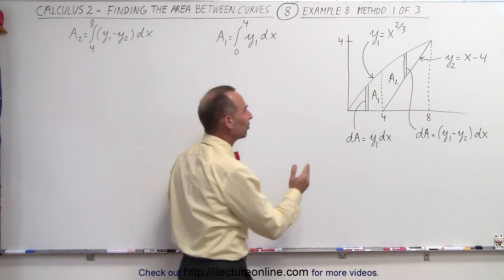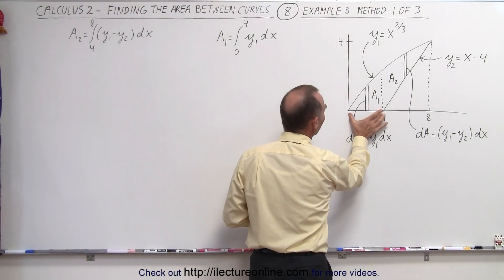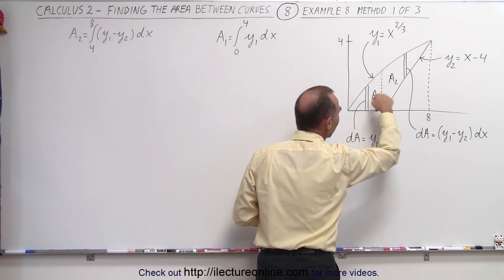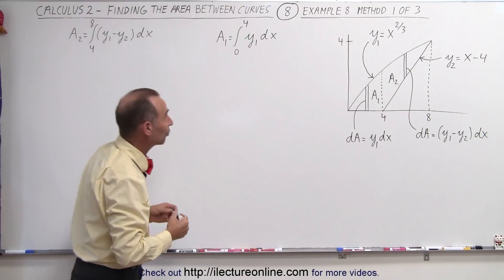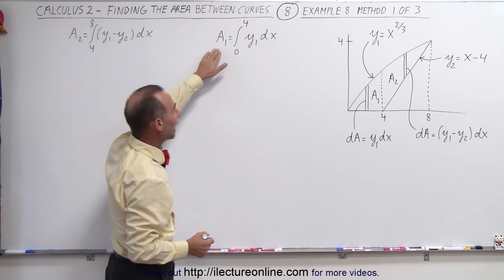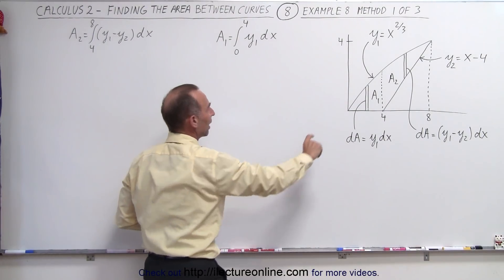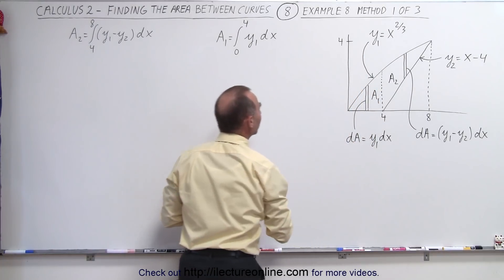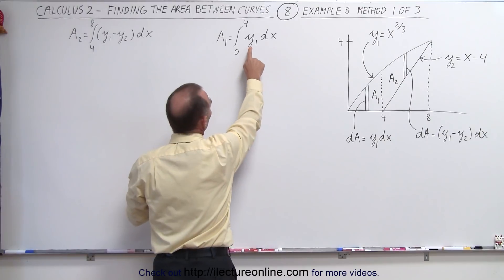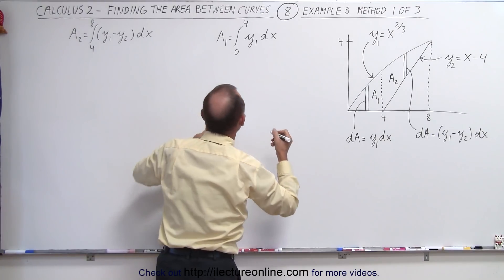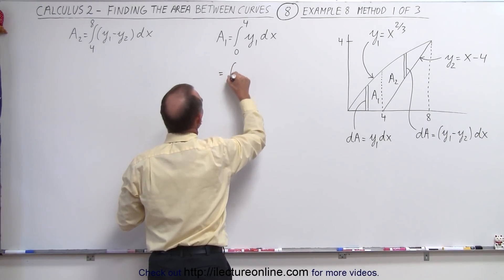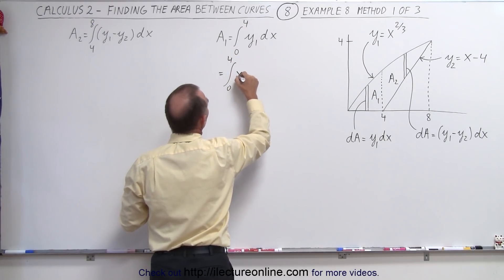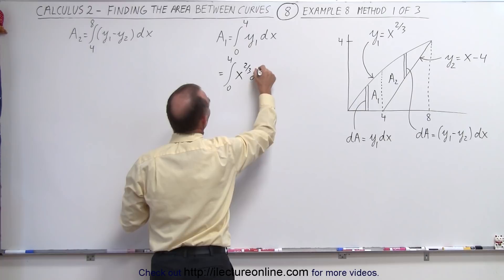So what we're going to do here is handle it separately. We'll calculate A1 using one area element and A2 using the other, then add the two areas together. For A1, we simply find the height from the x-axis to the curve y equals x to the two-thirds. Replacing y1 with its expression in x, this becomes the integral from 0 to 4 of x to the two-thirds times dx.